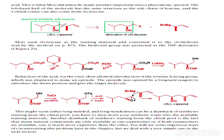This synthesis might seem rather long-winded, and length can be a drawback of synthesis starting from the chiral pool — you have to tailor your synthetic route to the available starting material. Another drawback of synthesis starting from the chiral pool is the fact that many natural compounds are only available as one enantiomer, or if both enantiomers are available, one is more expensive than the other. This is the most important drawback of chiral pool synthesis. You will see some examples of this in this section.